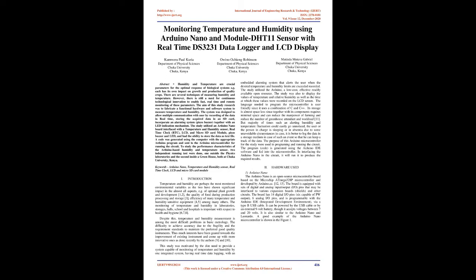Temperature and humidity are perhaps the most monitored environmental variables, as the two have shown significant impact in almost all aspects, e.g., optimal plant growth and development, the quality of food during production, processing and storage, and the efficiency of many temperature and humidity sensitive equipment, among many others.